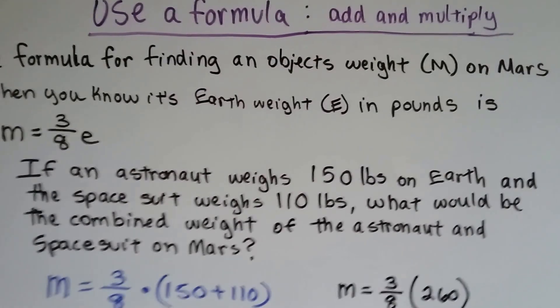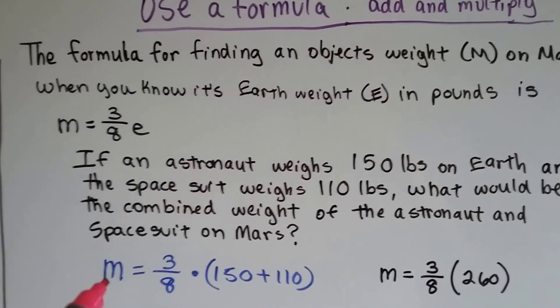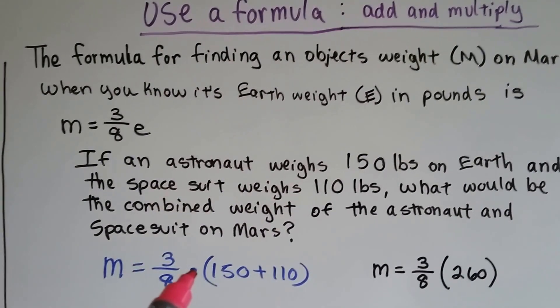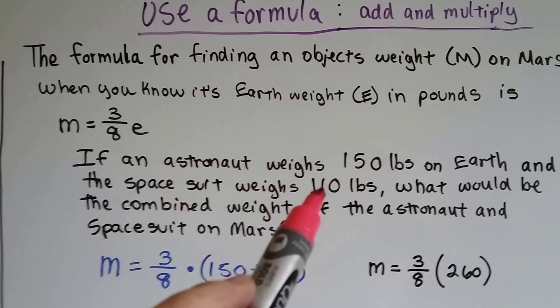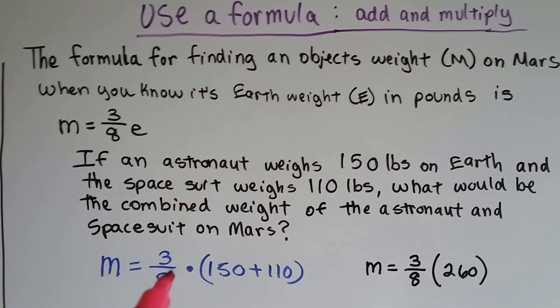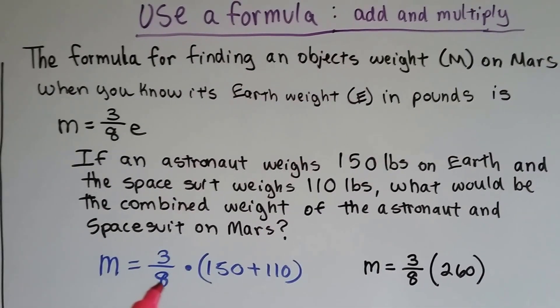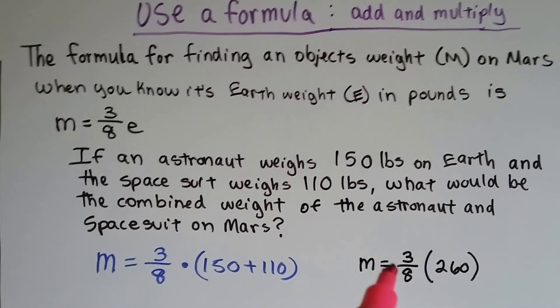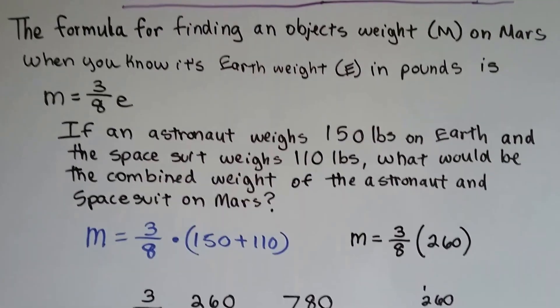So here's our equation. We know that the Mars weight is equal to 3 eighths the Earth's weight. So we plug in the 150 and the 110. We need to add them. And then we're going to have to multiply them to the 3 eighths. 150 and 110 is 260. So now we need to multiply 3 eighths times 260.